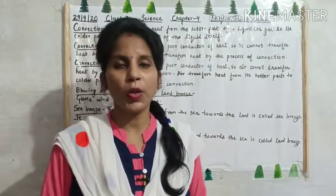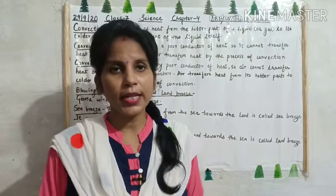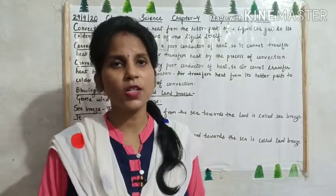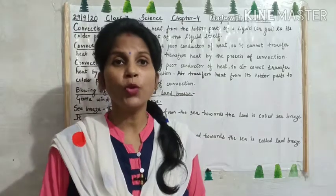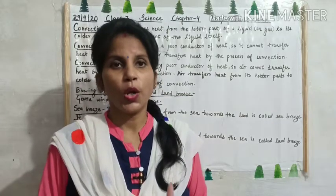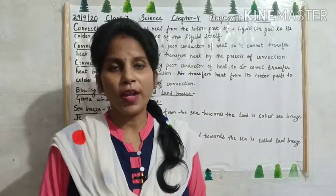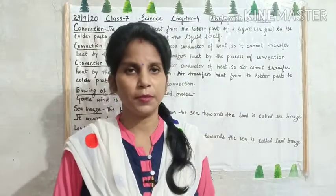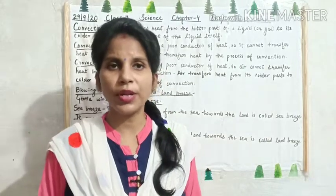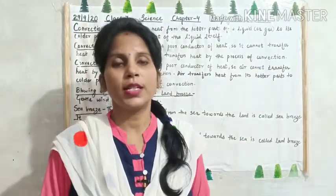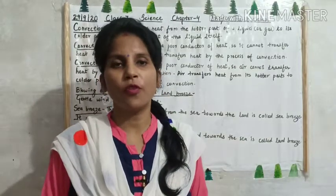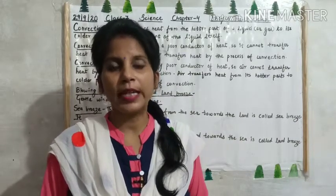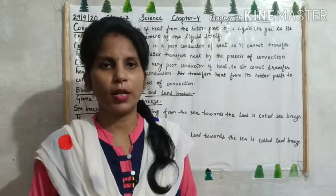In our previous video, we had studied what is heat. Heat is a form of energy and it makes the substance hotter. Then how do we measure the heat? We measure the heat with the help of an instrument called a thermometer. And what is temperature? Temperature is the degree of hotness or coldness of an object. Now, thermometer is of two types: clinical thermometer and laboratory thermometer.